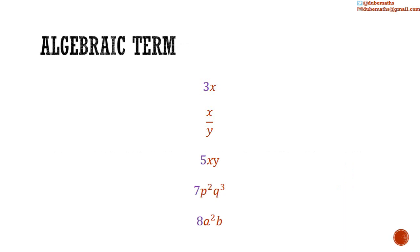Generally, an algebraic term consists of a coefficient, written in purple on the slide, and an algebraic quantity, which is a combination of letters that are related by multiplication and or division, written in brown. Some examples are 3x, x over y